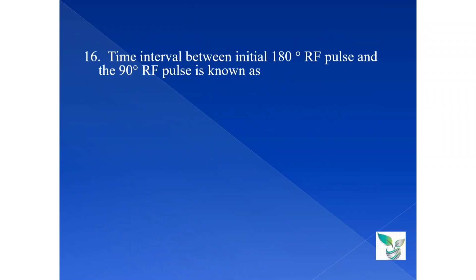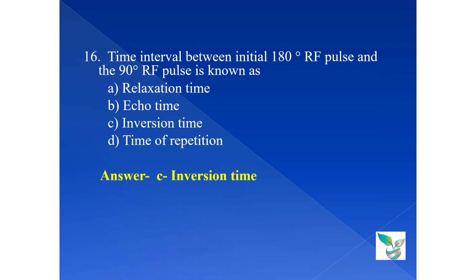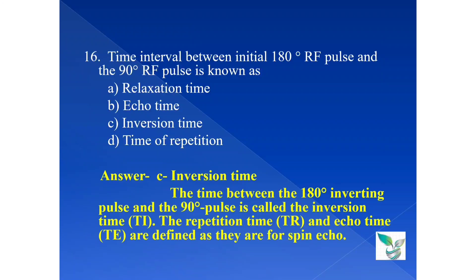Question number 16. The time interval between initial 180 degree RF pulse and the 90 degree RF pulse is known as: option A relaxation time, option B echo time, option C inversion time, and option D is time of repetition. The answer is option C inversion time. The time between the 180 degree RF pulse and the 90 degree RF pulse is called the inversion time. The repetition time TR and the echo time are defined as they are for spin echo.